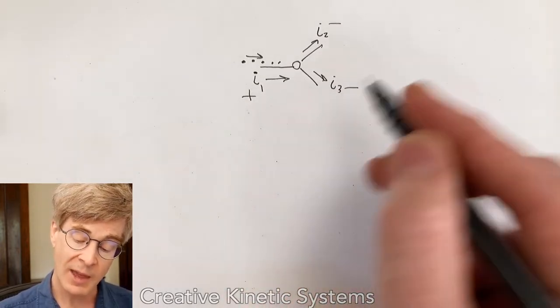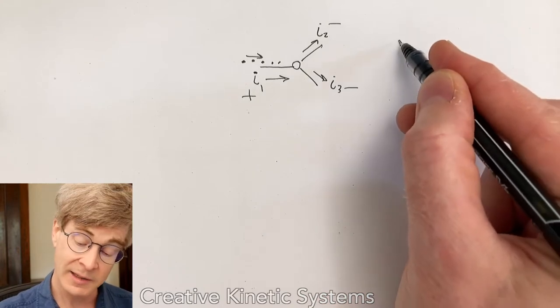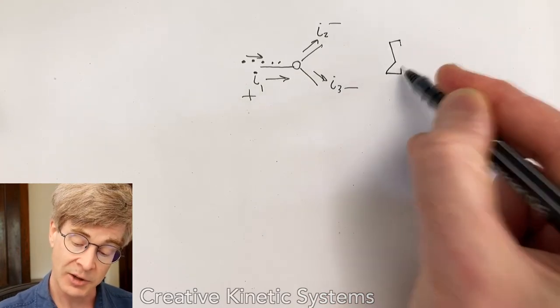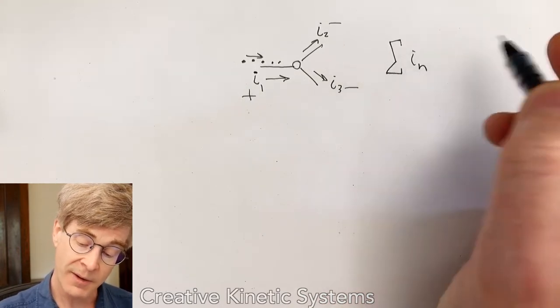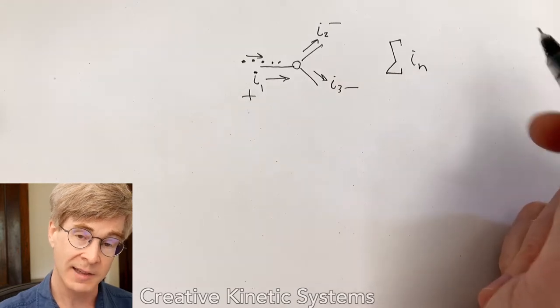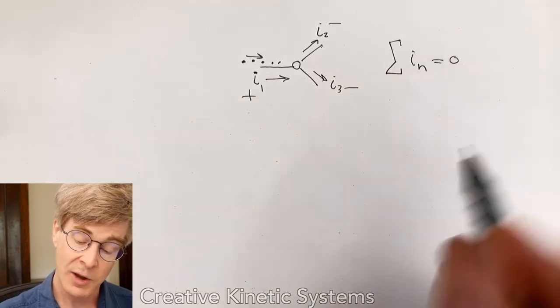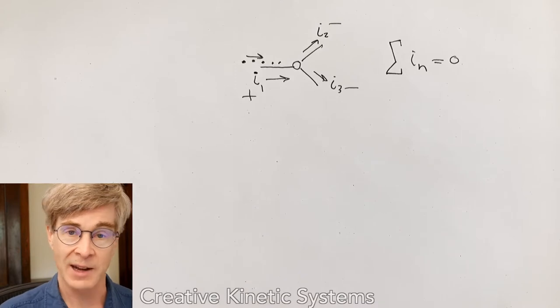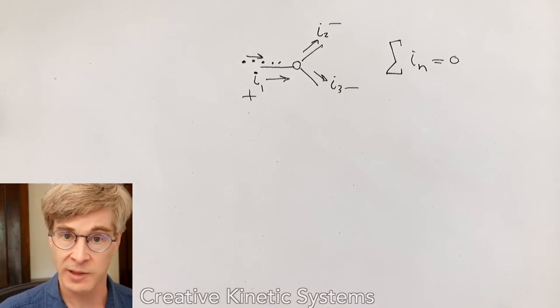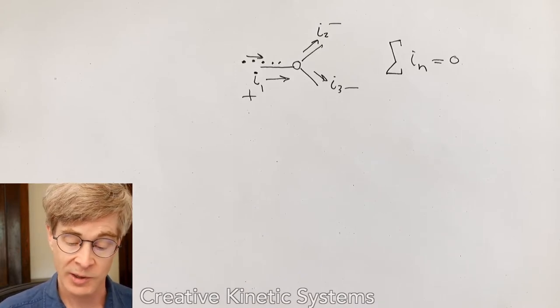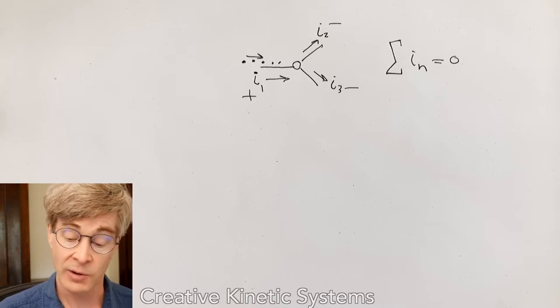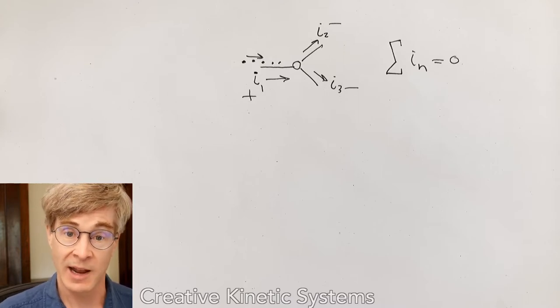If we write that formally, what we'll get is a sigma for summation. The sum of all currents, I sub n, is zero. So here, a positive added to two negatives would end up equaling zero, because for every charge that comes in, it comes out either one of the other ports, and we get a net total of zero.